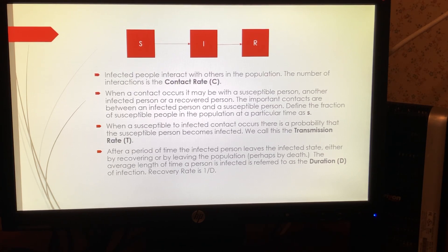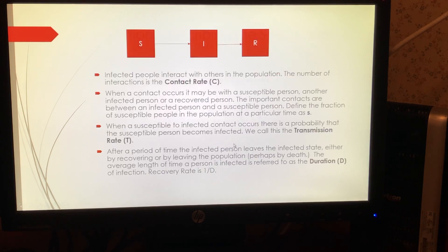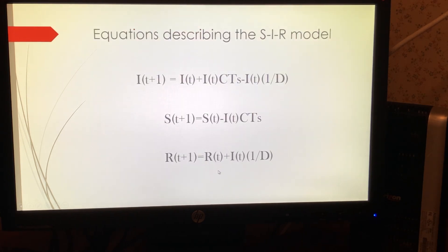We also have this thing called the transmission rate. Just because a susceptible person comes in contact with an infected person doesn't mean they will automatically be infected — we have a probabilistic transmission rate T that tells you the probability with which that susceptible person moves from the S box into the I box. Finally, infected individuals eventually move into the recovered state. We measure the number of days it takes and call that the duration of the infection D, and we also have the recovery rate, which is just 1 over D.